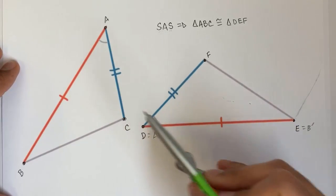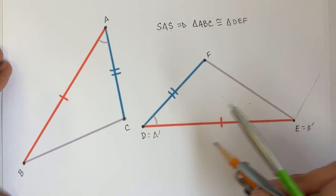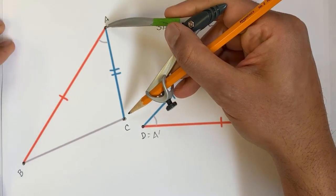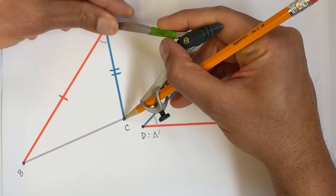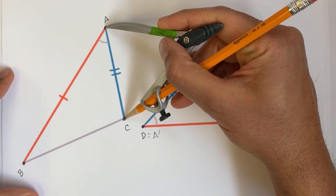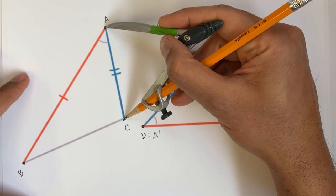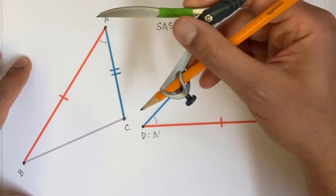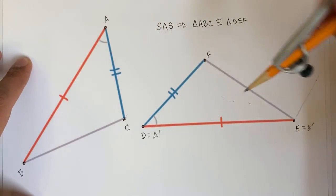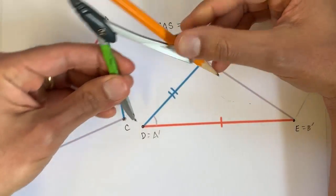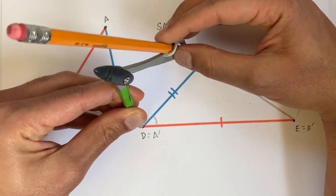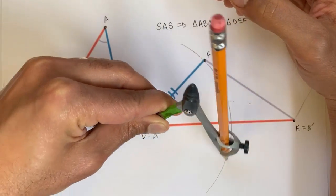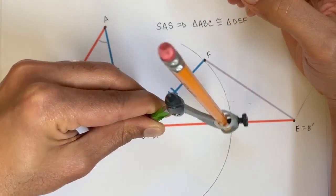But the question is, where would C now sit? Well, we can see the distance between A and C. In fact, we can use our compass for it. The distance between A and C is just like that. And since all of these rigid transformations preserve distance, we know that C prime, the point that C gets mapped to after those first two transformations, its distance is going to stay the same from A prime, so C prime is going to be someplace along this curve right over here.